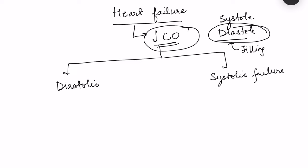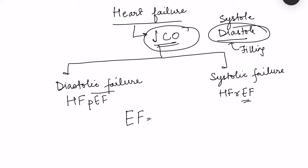The terms systolic failure and diastolic failure have been replaced by newer terms. Systolic failure is now known as heart failure with reduced ejection fraction (HFrEF), and diastolic failure is now known as heart failure with preserved ejection fraction (HFpEF). The ejection fraction is the fraction of blood pumped out of the heart — the ratio of stroke volume to end diastolic volume, expressed as a percentage.